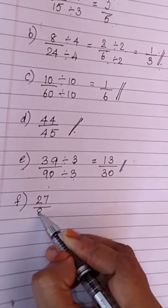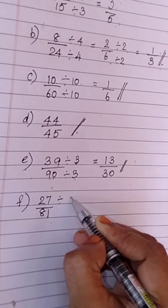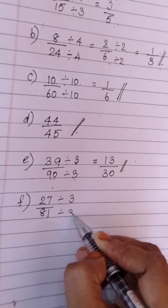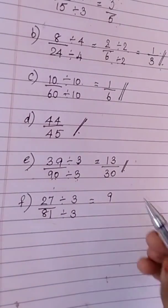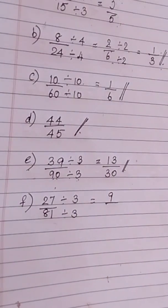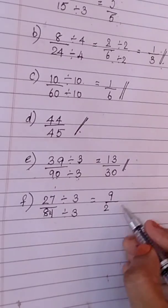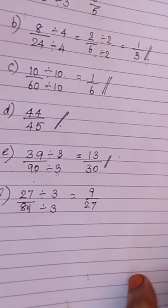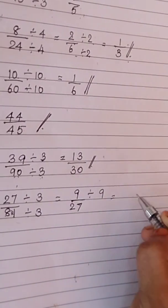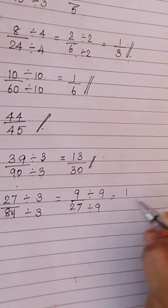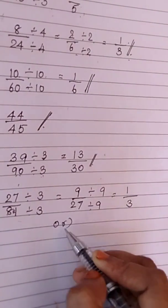27 by 81. Both are commonly divisible by 3. Let me take 3 first. 27 is 9 3s and 81 is 27 3s. 3 7s are 21. Now, again this both are divisible by 9. So, let me take 9 as the highest common factor. 9 1s are 9 and 9 3s are 27. So, with this our sum is over.